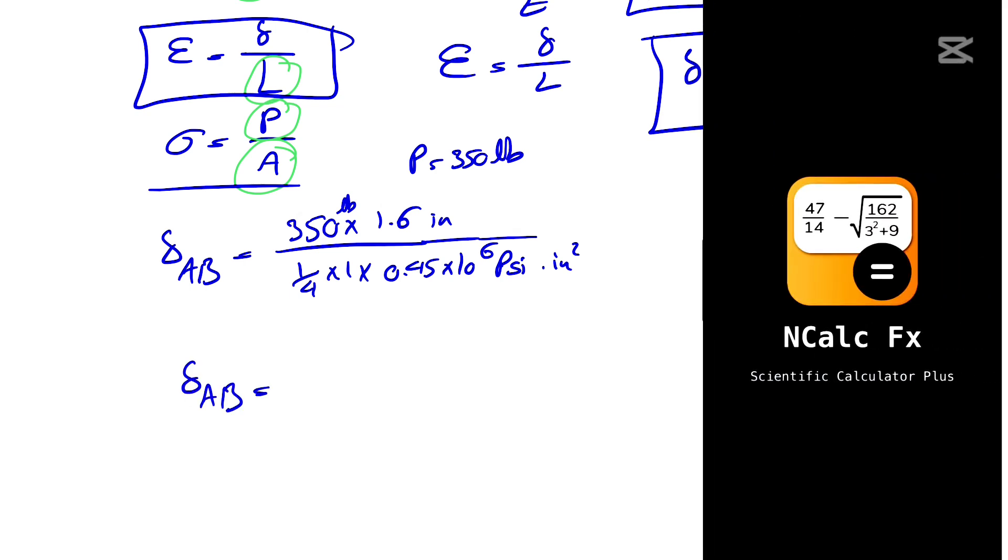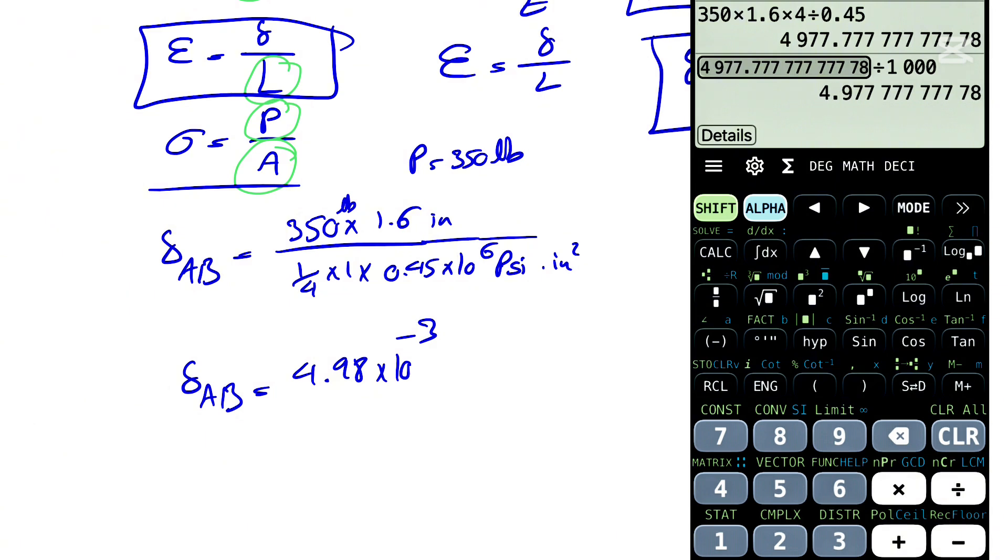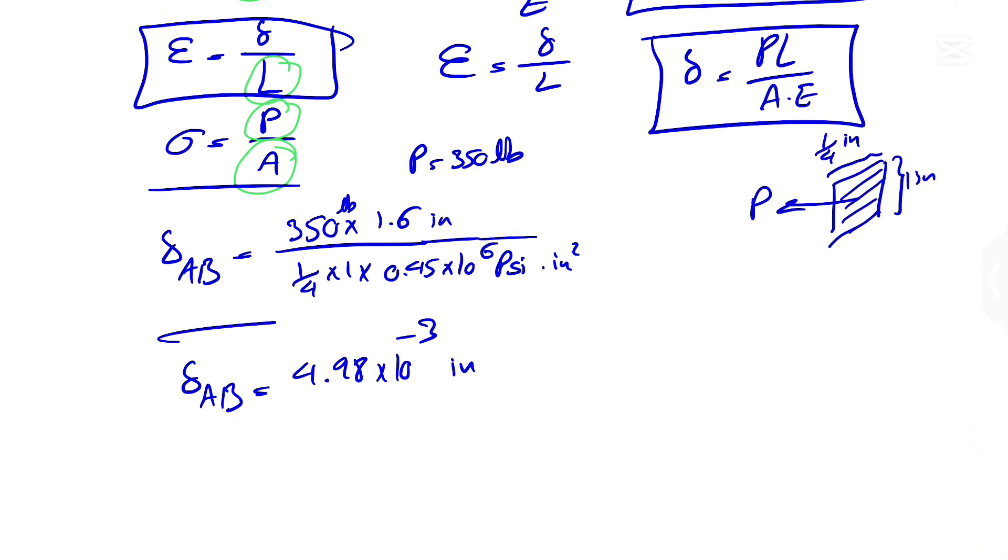So let's calculate this. 350 times 1.6, the one quarter is going to go into the denominator times 4, divided by 0.45, and we're going to divide this by 1000. This is going to be 4.98 times 10 to the minus 3 because I divided by 1000. We have to divide it by 10 to the 6, so that's where this minus 10 to the minus 3 is coming from. So that was the first part or the first deformation from AB section.